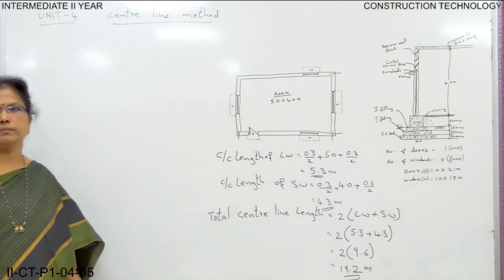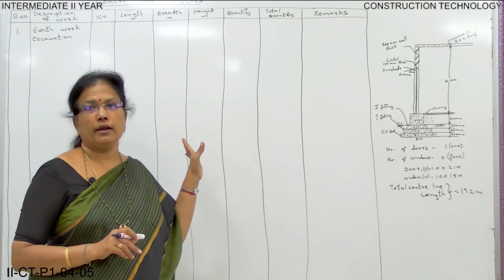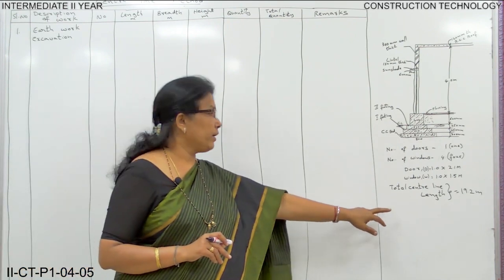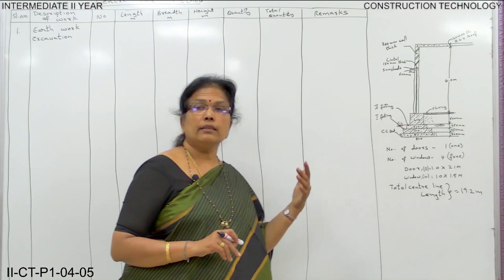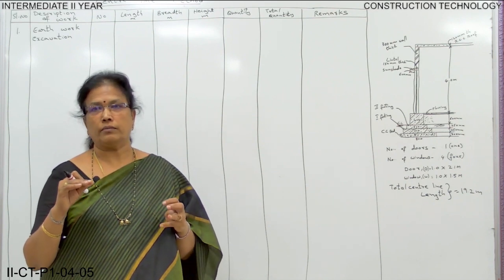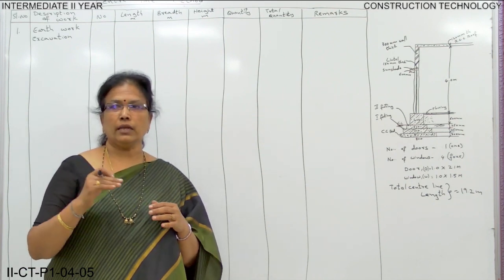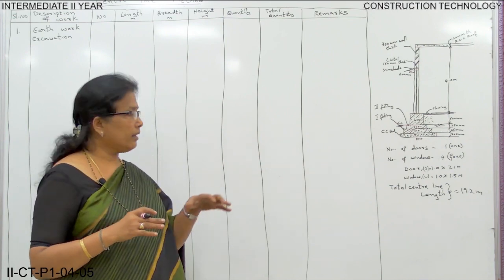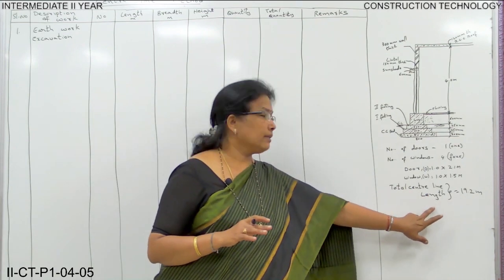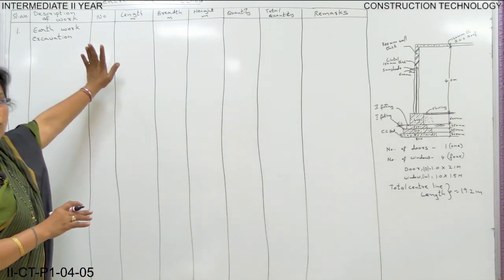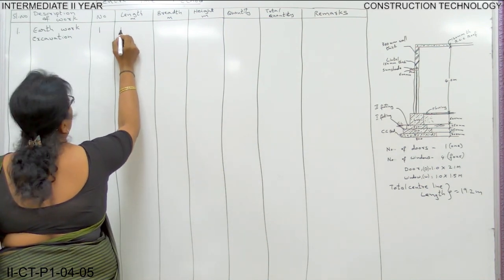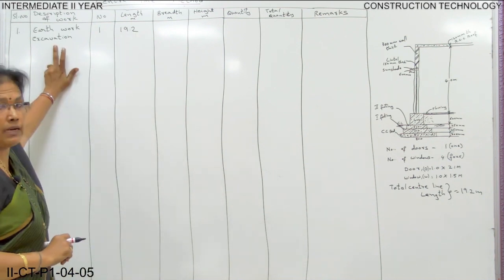Now let us do the problem. I have drawn a detailed measurement form. We have calculated the total centre line length as 19.2 meters. In the long and short wall method, we used to calculate the quantities of items — long wall separately, short wall separately — and then add both. But here we have calculated the total centre line length, so directly we will take the centre line length. In number, we have only 1, and the length of the line is 19.2.